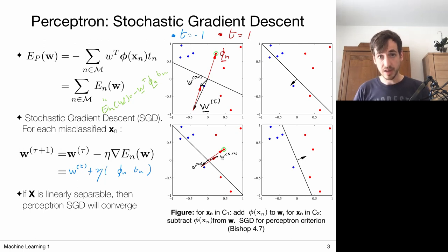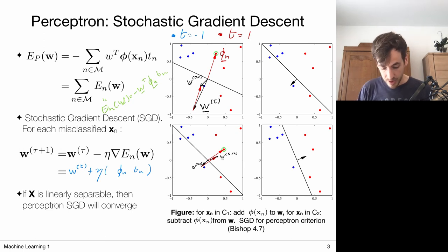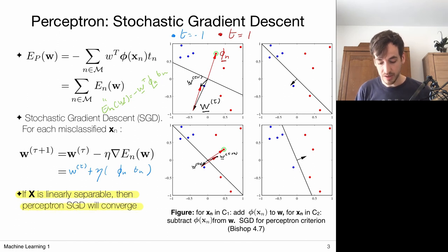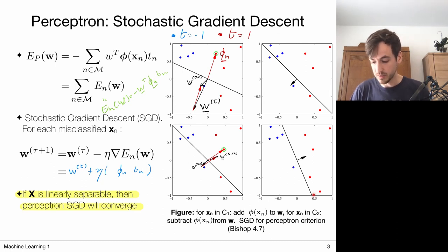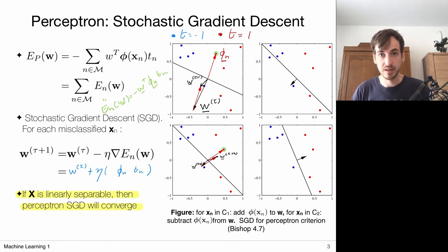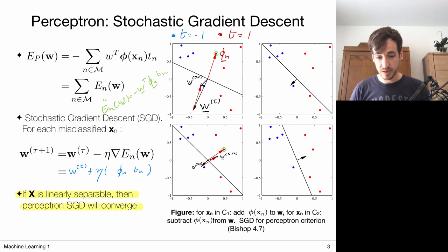This is actually a really nice property of the perceptron algorithm: if my data is indeed linearly separable, then the perceptron stochastic gradient descent will converge. This very simple algorithm will converge in the end to a decision boundary that perfectly separates the data into two classes.